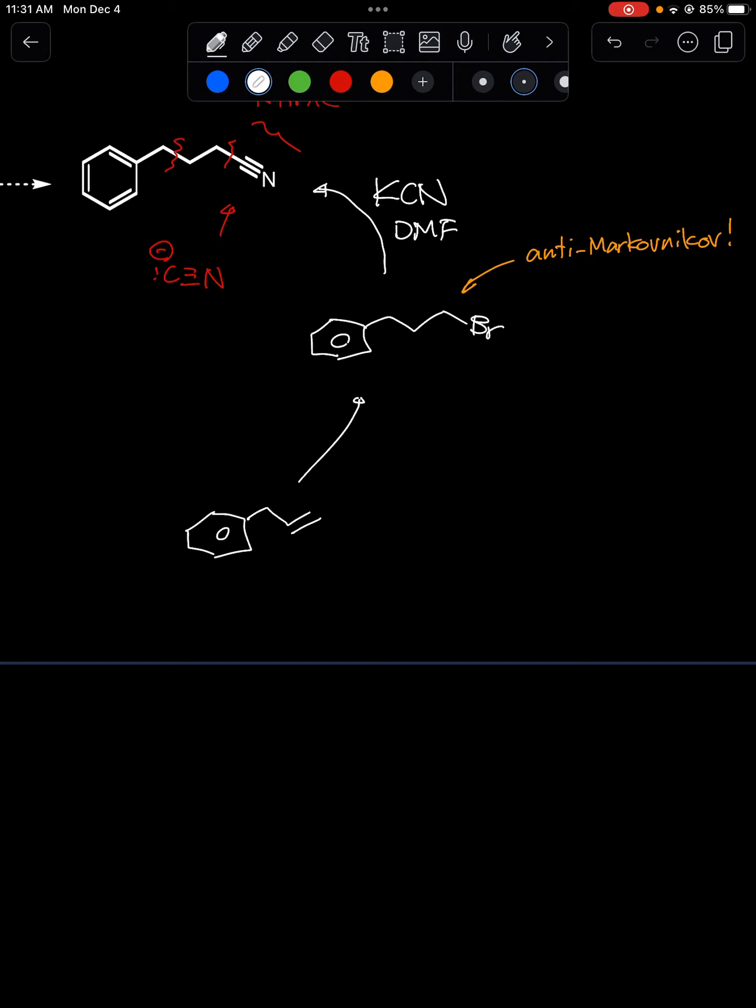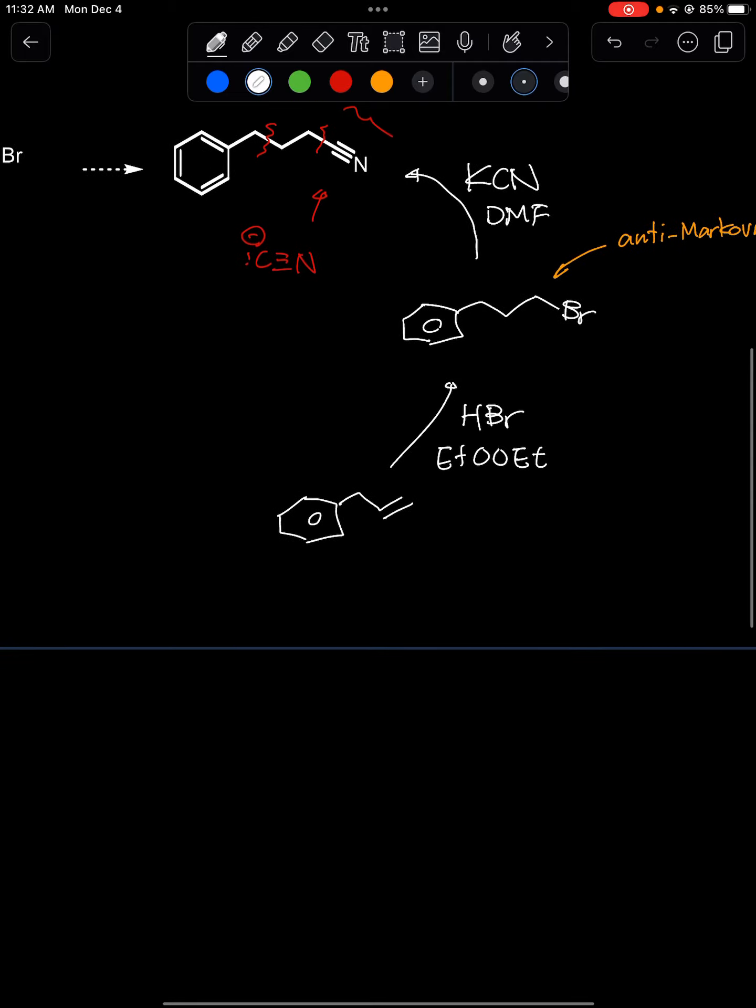In an anti-Markovnikov fashion if you just did hydrogen bromide of course it would give you a Markovnikov product where the bromide would be secondary. But you could make anti-Markovnikov remember by making this a radical reaction by adding that peroxide which is in your chapter 8 notes as well as in your chapter 10 notes.